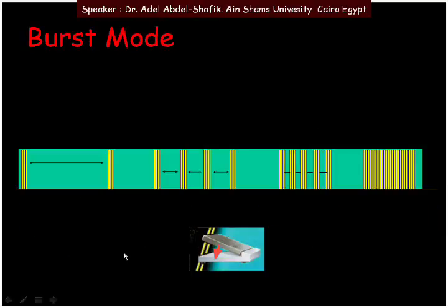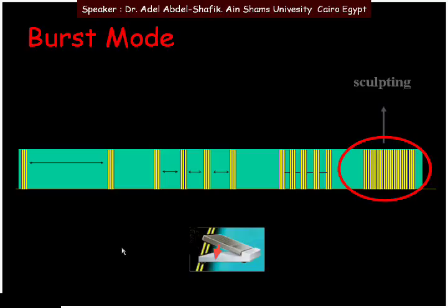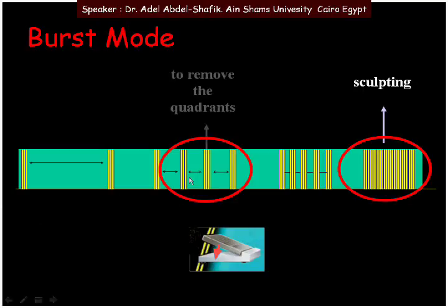Applying this to burst mode: when the pedal is pressed deeply into position three, we have continuous phaco, which can be used for sculpting. With the pedal midway in position three, we have intervals of on and off, which is suitable for removal of quadrants.